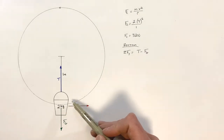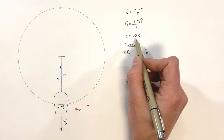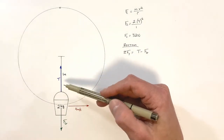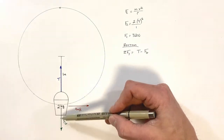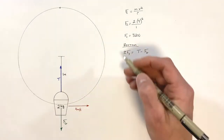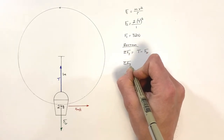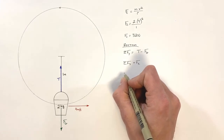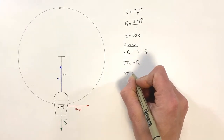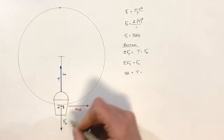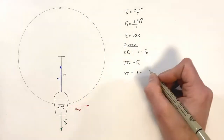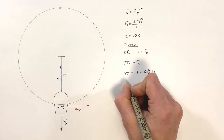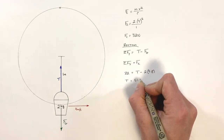Because this bucket is moving in a circle at a constant speed, this net force is the centripetal force. Both forces combined make up our centripetal force. So the sum of all forces in the y-axis equals Fc: 32 newtons equals tension minus the force of gravity, where the force of gravity is mass times 9.8. Solving, the tension in the cable works out to be 51.6 newtons.